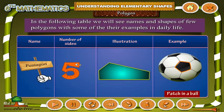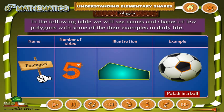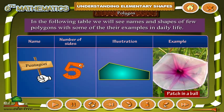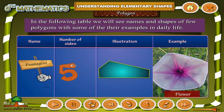Pentagon — number of sides is 5. Illustration, for example: Patch in a ball, Flower.